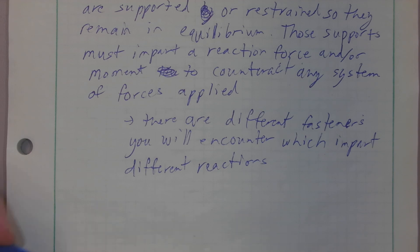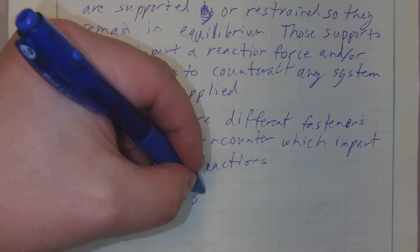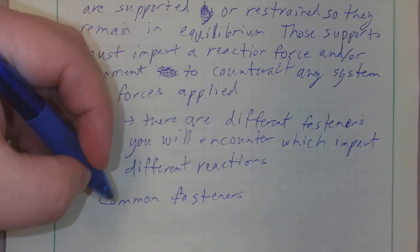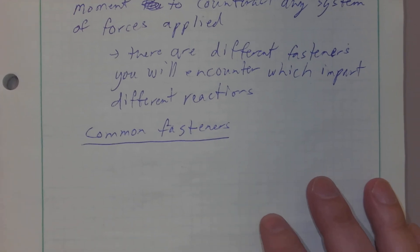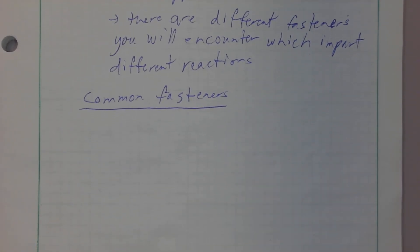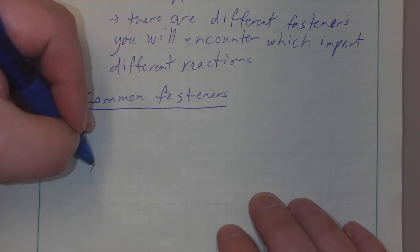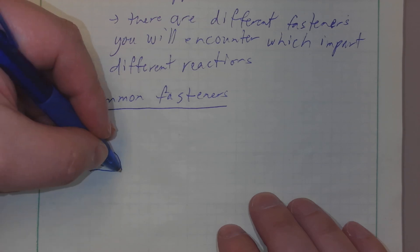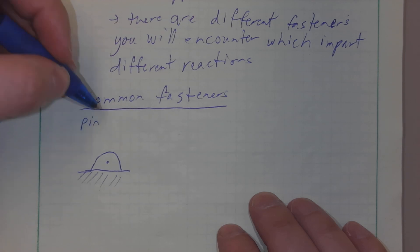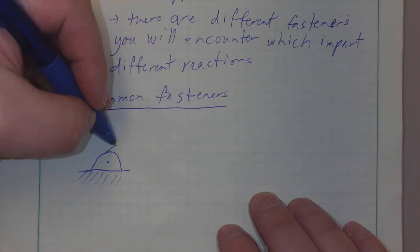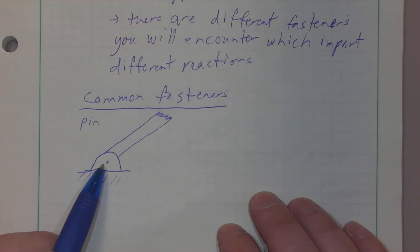Let's talk about some common fasteners that you will encounter. In your textbook — in the Hibbeler text that's normally table 5.1 — you will have a table that shows lots of common fasteners. One of the most common ones we'll encounter throughout the semester is called the pin. The pin would be something where I've got something attached here at a pin.